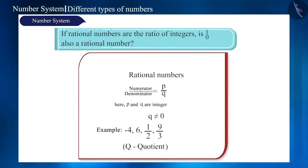Friends, if we look at the definition of rational number, it says that the rational number is in the form P by Q, where both P and Q are integers and Q is not 0.